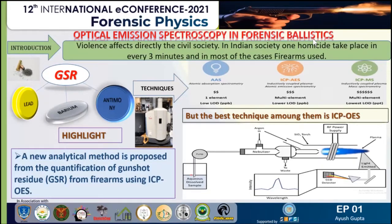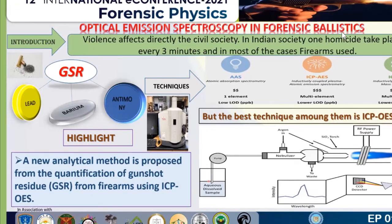This technique is best due to two reasons: low price installation and maintenance compared to ICP-MS. The principle of this technique is shown in this diagram. In this technique, the plasma converts the compound of the element traces into atomic form. When heat is produced, the atom goes into a higher energy state, and when it returns to the lower energy state, it emits energy. That energy is converted into a graph and wavelength. A new analytical method is proposed for the quantification of gunshot residue from firearms using ICP-OES.